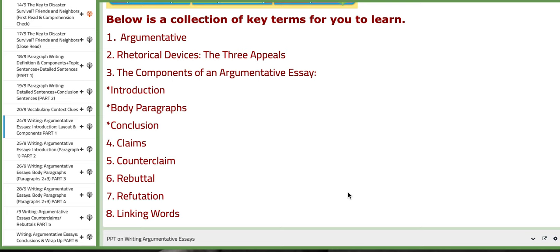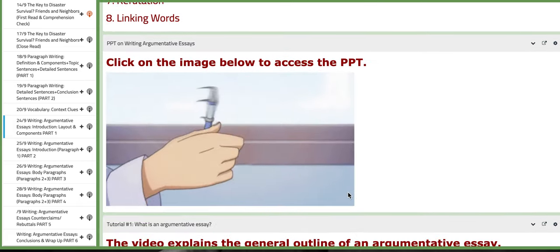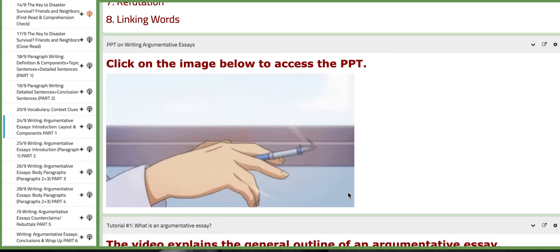These are the essential key terms that you need to consider, such as argumentative, rhetorical devices, the three appeals, really important, the components of an argumentative essay such as introduction, body paragraphs, conclusion. We have claims, counterclaims, rebuttal, refutation, and linking words.